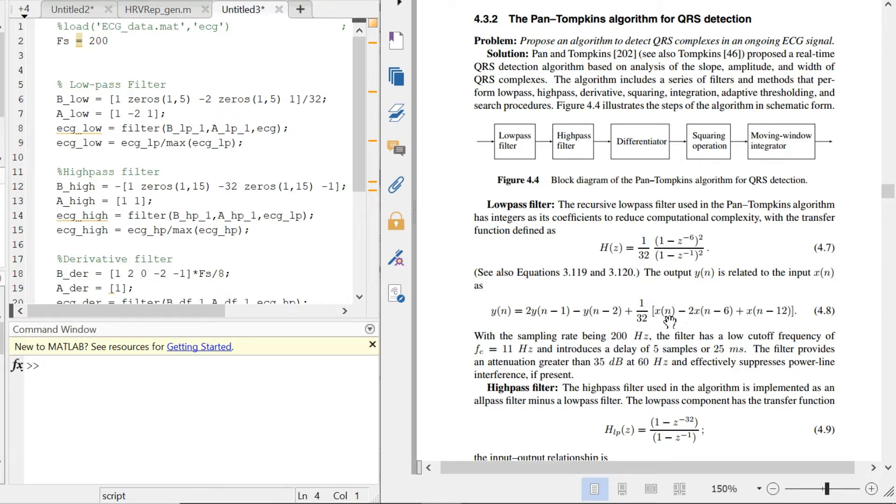On the other hand, for the x terms, we have 1, then we have 5 missing terms between n-1 to n-5, so they can be comprehended as zeros. Then we have a -2 coefficient for the n-6 term, then another 5 zeros between n-7 to n-11, and then we have a +1 term for the x(n-12) term.